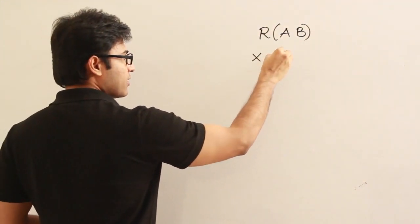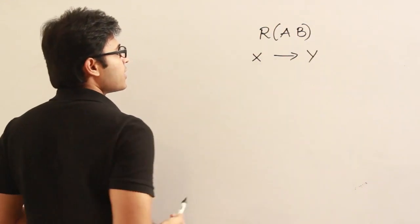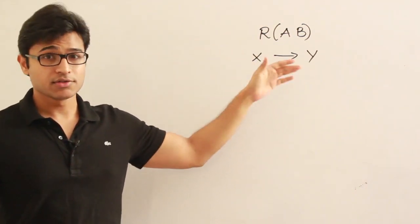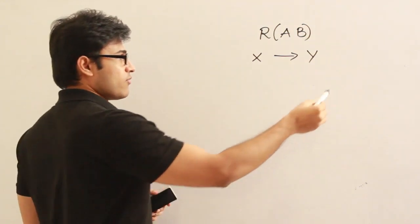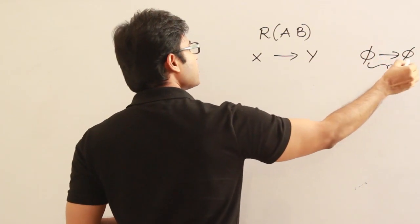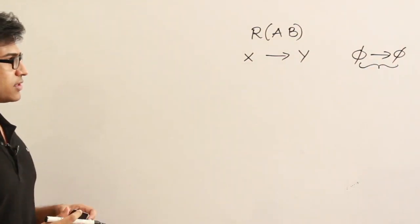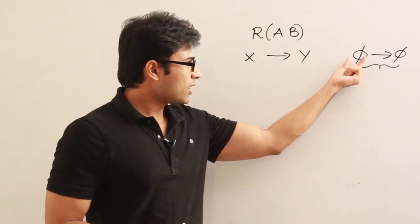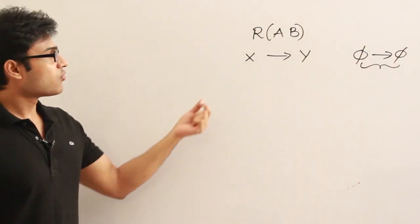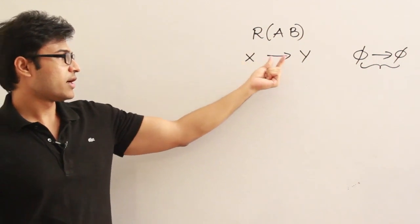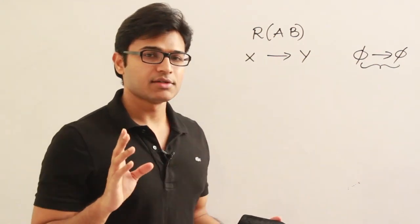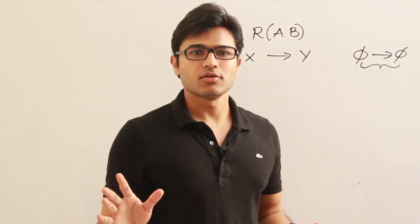With just these two attributes, how many functional dependencies are possible? A functional dependency has a left side and a right side — X determines Y. The left side can be any number of attributes and the right side can be any number of attributes, including zero. So even 'phi determines phi' is valid according to the definition, since the left side and right side each just need to be a subset of attributes.